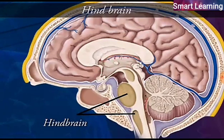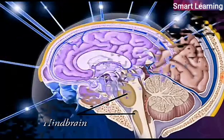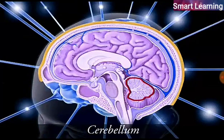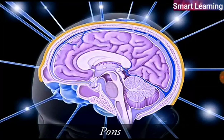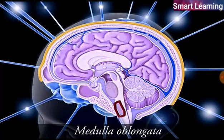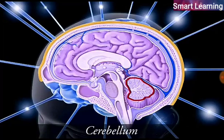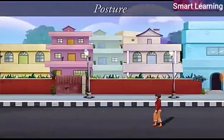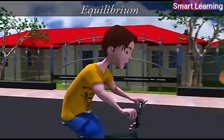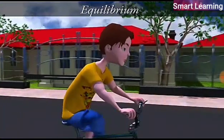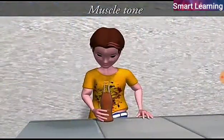The third part of the brain is the hindbrain, which consists of three parts: cerebellum, pons, and medulla oblongata. The cerebellum is the second largest part of the brain and it maintains posture, equilibrium, and muscle tone.